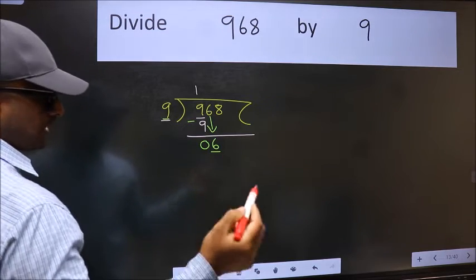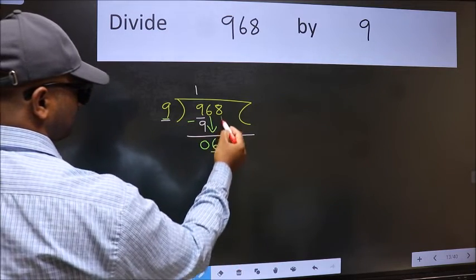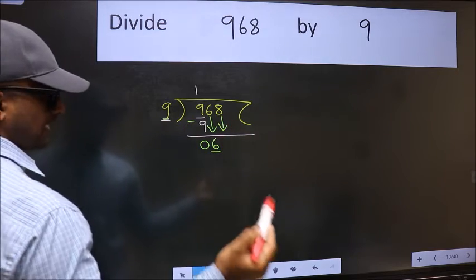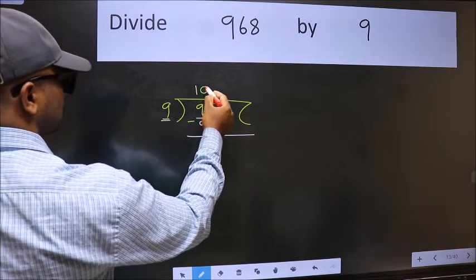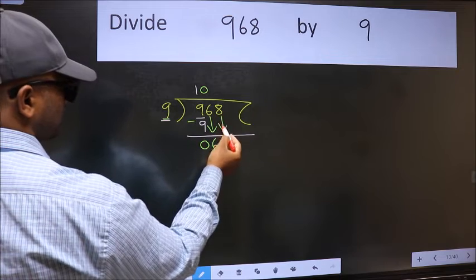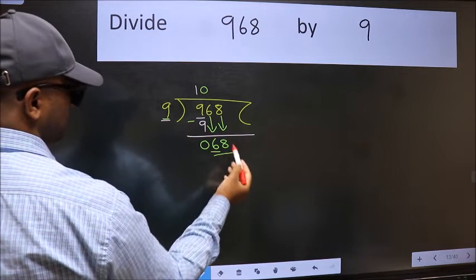So we should bring down the second number. And the rule to bring down the second number is we should put 0 here. Then only we can bring this number down. Now 68.